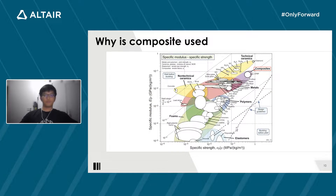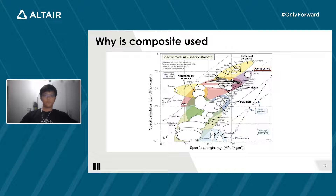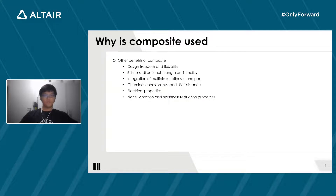Comparing composites to other materials — why are composites used? Composites are widely used because of their superior material properties. We can see in this plot where the x-axis shows specific strength and the y-axis shows specific modulus. Composite materials are in the top right corner of the plot. Compared to metals, composites have better material properties. Composites offer better performance thanks to their unmatched strength-to-weight ratios. Beyond being lightweight, composites have additional properties and offer many more benefits to fit the requirements of highly demanding applications.